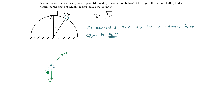I'm going to define my axes. The inward normal pointing toward the center of the circle is the positive normal direction, and the tangential direction is always pointing tangent to the circle. So we'll write the forces in the normal and tangential components.